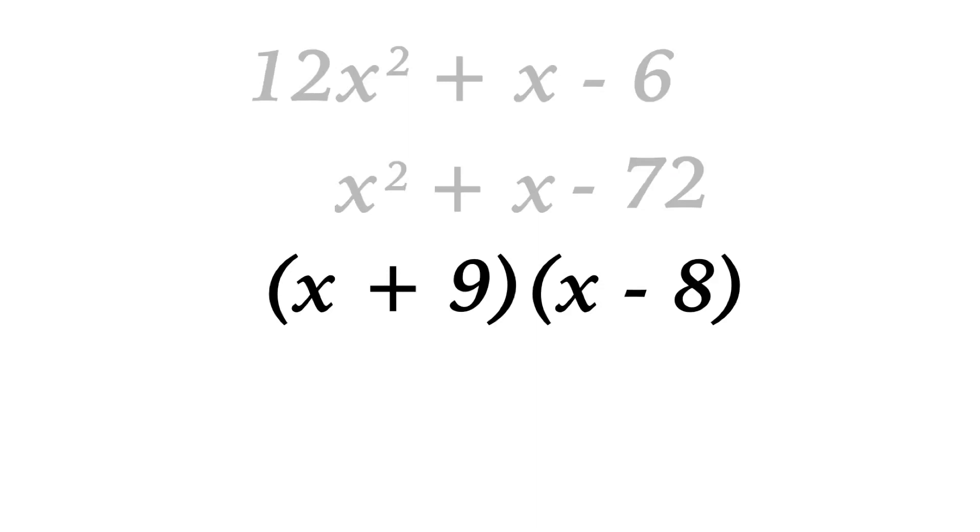At this point, we're going to go back to that leading coefficient of 12, and we're going to use it to divide both the 9 and the 8. So we're looking at something like x plus 9 over 12 and x minus 8 over 12.